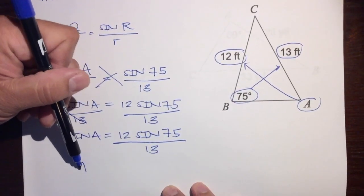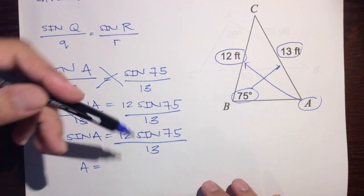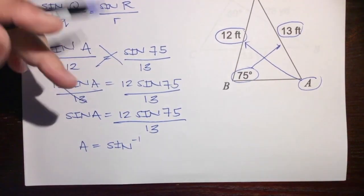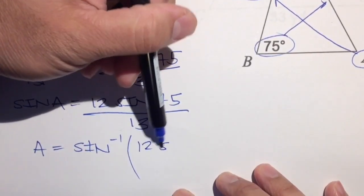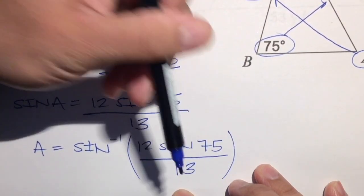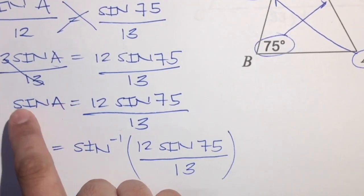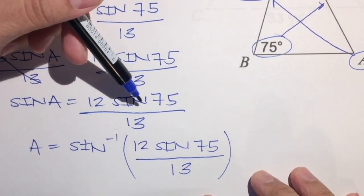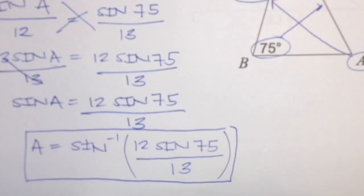We're going to write A equals and surround the entire right-hand side with inverse sine — sine to the negative one. So we get: A equals inverse sine of (12 times the sine of 75 over 13). This would be our final answer in exact form.